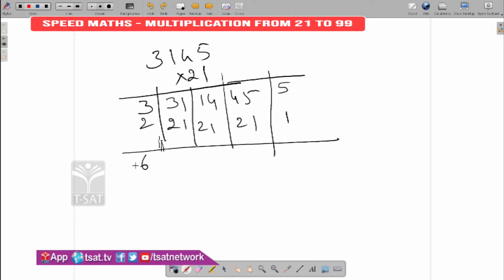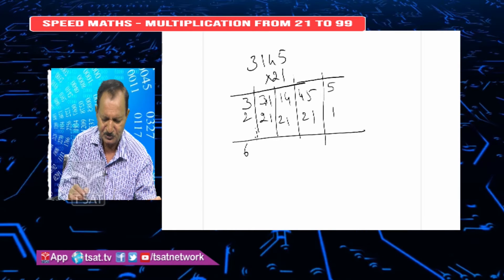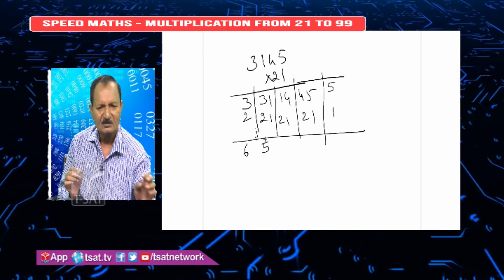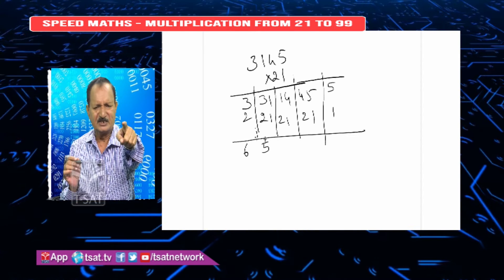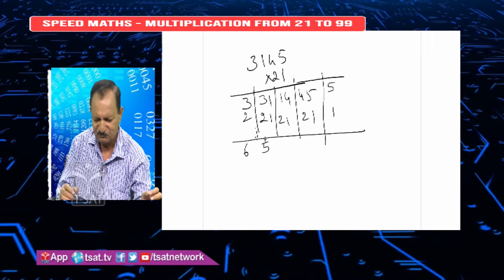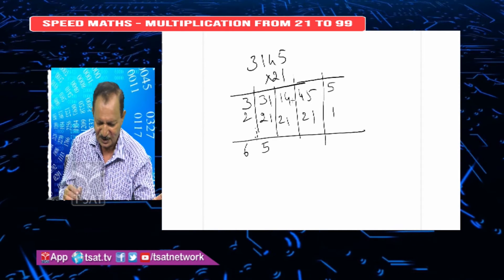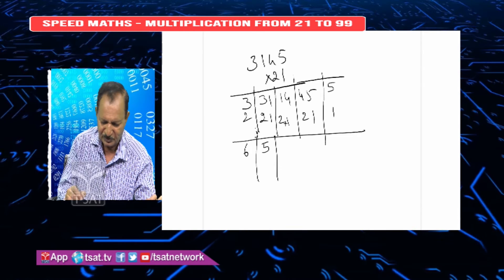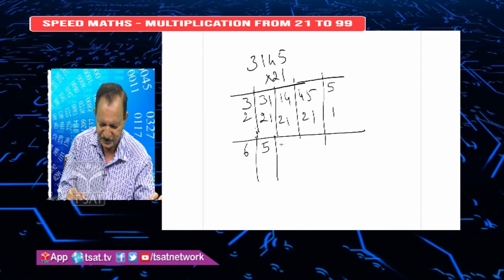Only cross multiplication — multiplication is one. If 31 into 21, cross multiplication is 1 into 3 equals 3, and 2 into 1 equals 2, so 3 plus 2 equals 5. Next, 14 into 21 cross multiplication: 1 into 1 is 1, 4 into 2 is 8, 8 plus 1 equals 9.